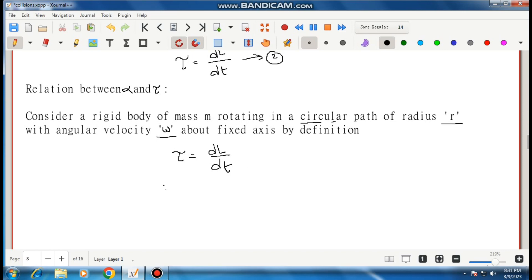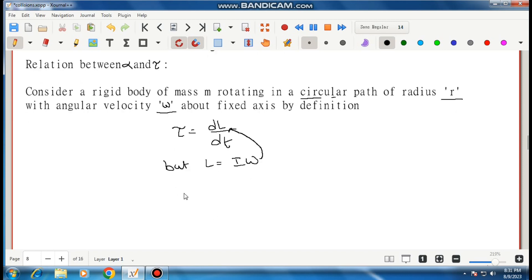But we know L is equal to I omega. I means moment of inertia, omega means angular velocity. Now substitute this value here. Then tau is equal to d by dt of I omega.